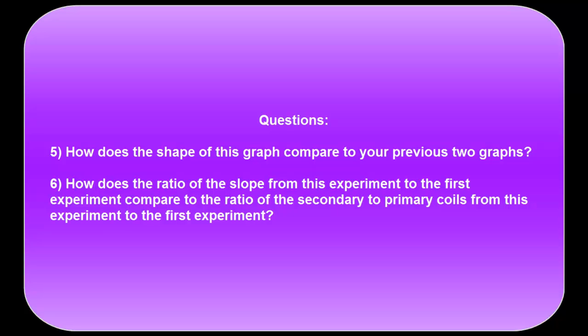How does the ratio of the slope from this experiment to the first experiment compare to the ratio of the secondary to primary coil turns from this experiment to the first experiment?